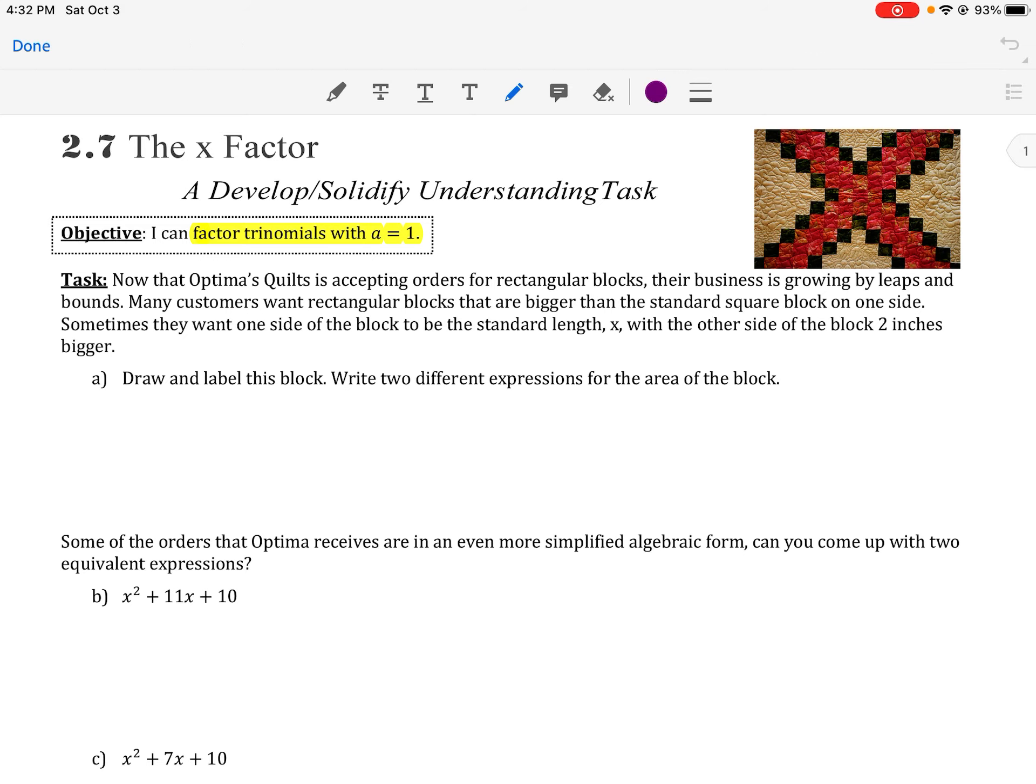Draw and label this block. So we've got the standard block, the x squared. That means it's two side lengths x, and then one side that's two inches bigger. So one side they're extending it plus two. We write the inside expression to be x squared plus x plus x is 2x. If we wrote the outside expression, we'd have one side length is x, the other side length is x plus two.